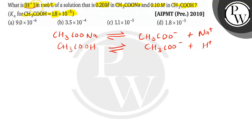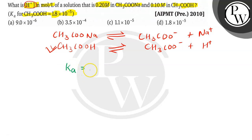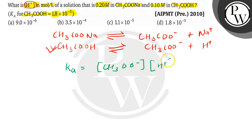Since we need to find the concentration of H⁺ ion, we will consider CH₃COOH. By Le Chatelier's principle, Ka equals the concentration of products — that is CH₃COO⁻ — upon the concentration of the reactant, CH₃COOH.